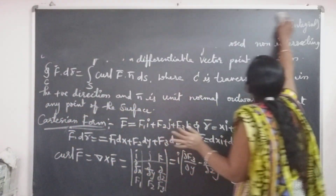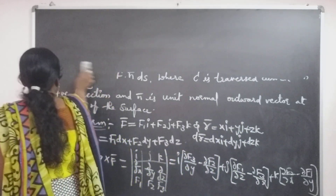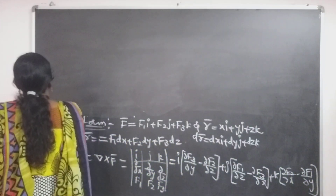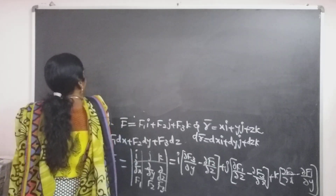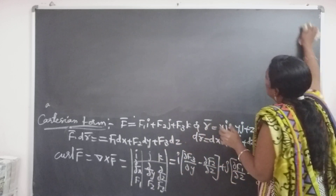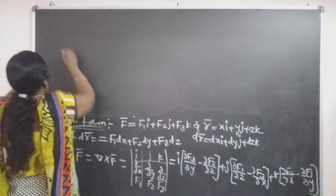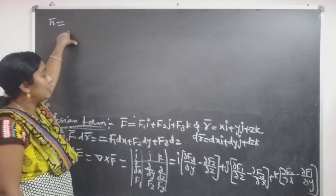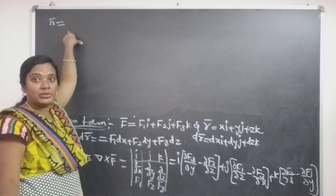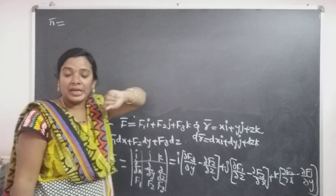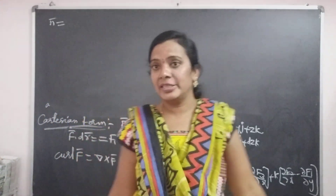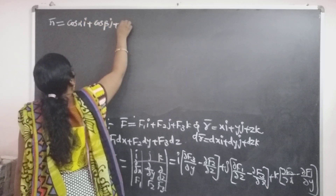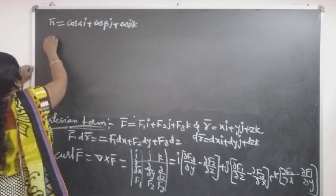The unit normal vector n-bar: we take the coordinates as cos α, cos β, cos γ — the direction cosines making angles with the x, y, z axes respectively. So n-vector equals cos α·i plus cos β·j plus cos γ·k.